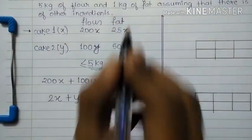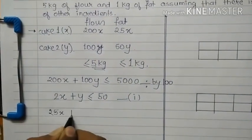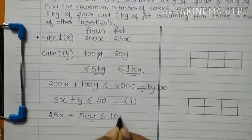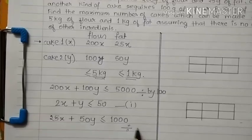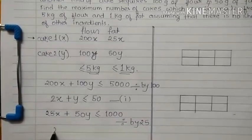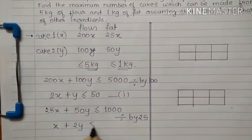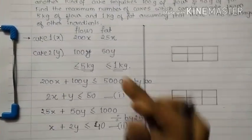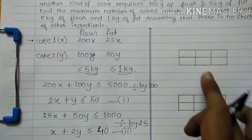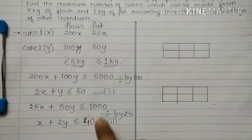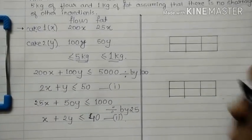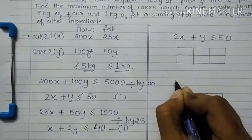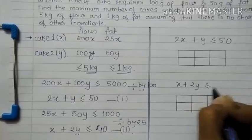For the second equation, I will take the fat constraint: 25x plus 50y less than or equal to 1kg, which is 1000g. Dividing this equation by 25, I get x plus 2y less than or equal to 40. This is equation 2. So the two equations are: 2x plus y ≤ 50, and x plus 2y ≤ 40.